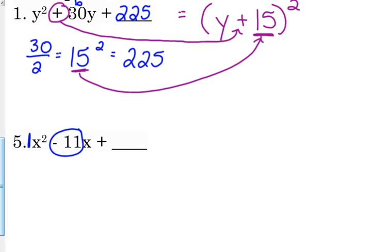We need to divide b by 2. So b is technically negative 11. I'm not going to worry about the negative right now. So I'm going to divide it by 2. 11 is not even, so that doesn't divide evenly. So we're just going to leave it as 11 over 2. So we're going to square it. When you square a fraction, you square the numerator. That's 121. And you square the denominator. That's 4. So that is the number that completes the square.